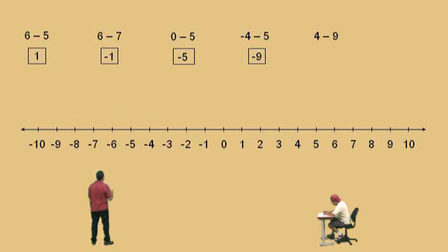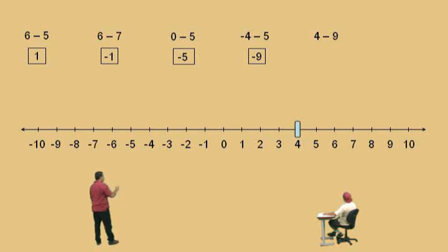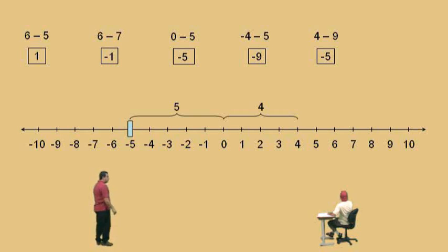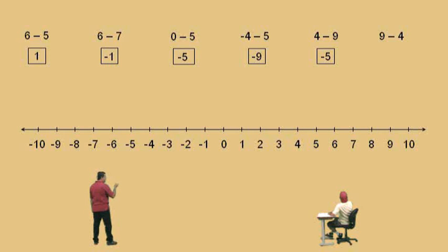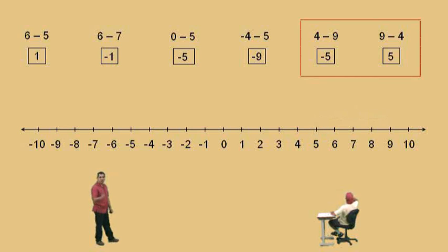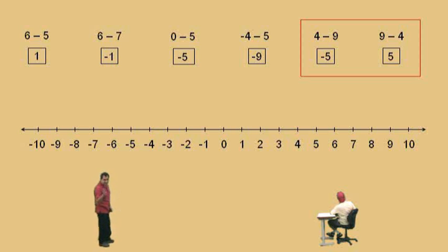Now here we have 4 subtract 9. We start at 4 and we move to the left nine times. If we start at 4 and move 4 units to the left, we end up at 0 — and we still have to move how many more, Charlie? Five more. And our answer is? Negative 5. Notice we started at 4 and moved a total of 9 units, which gives us negative 5. Now, watch this — 9 subtract 4. What's 9 subtract 4, Charlie? Five. This is a Kung Fu math technique: when someone asks what's 4 subtract 9, a person with good Kung Fu says, hey, 9 subtract 4 is 5, so 4 subtract 9 is negative 5. We'll talk more about that technique later on in the semester.